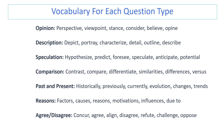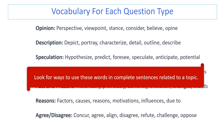To discuss Speaking Part 3 questions effectively, a range of essential vocabulary is beneficial. Here is a vocabulary list by question type. Opinion: perspective, viewpoint, stance, consider, believe, opine. Description: depict, portray, characterize, detail, outline, describe. Speculation: hypothesize, predict, foresee, speculate, potential. Comparison: contrast, compare, differentiate, similarities, differences, versus. Past and present: historically, previously, currently, evolution, changes, trends. Reasons: factors, causes, motivations, influences, due to. Agree/Disagree: concur, agree, align, disagree, refute, challenge, oppose. Look for ways to use these words accurately in complete sentences related to any topic — ChatGPT can help.